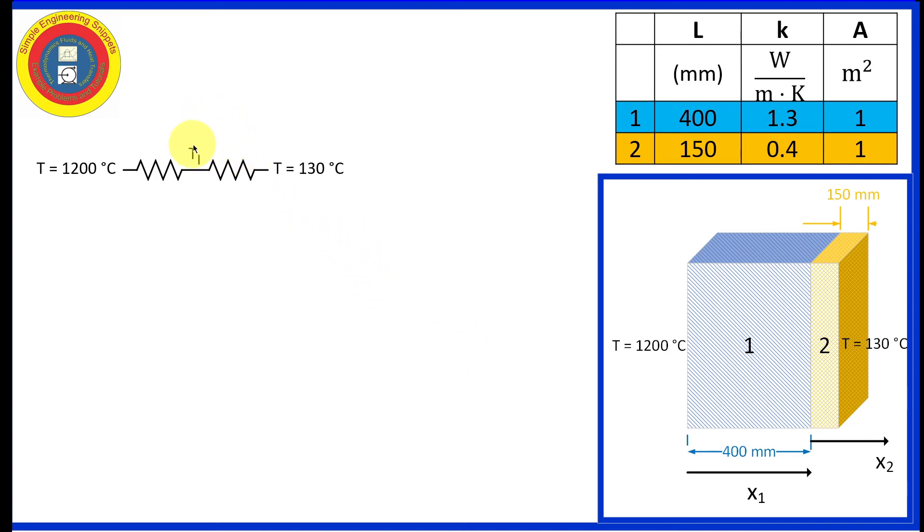Let's work on finding the interface temperature. So we already know a lot about this circuit. We already calculated the values for the resistors, and we know the amount of heat transfer passing through the circuit. And just like an electrical circuit, if I know the current and I know the resistance, I can multiply those together to find the voltage drop or change across the resistor. And I can do the same thing for a thermal circuit.